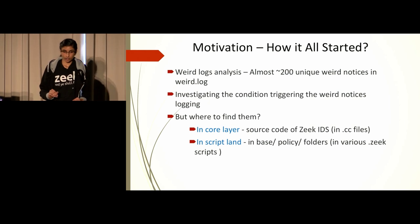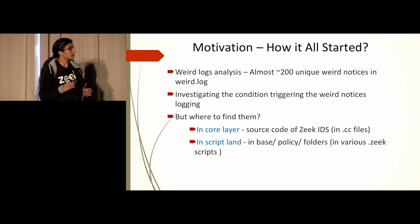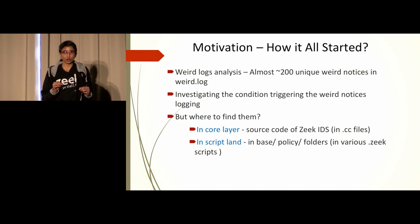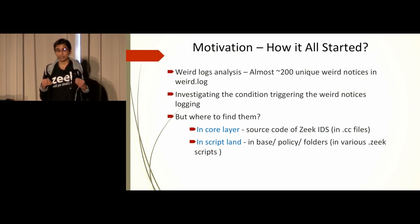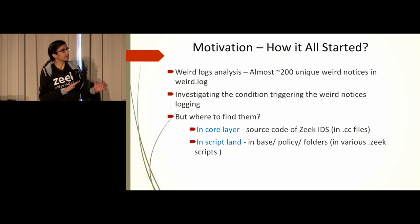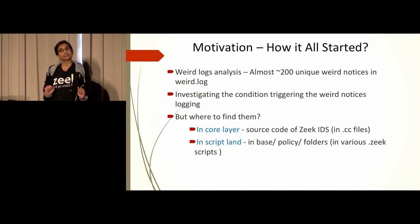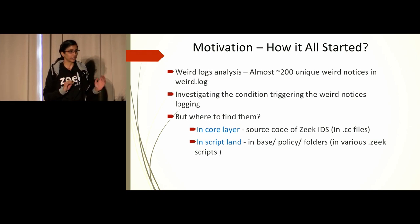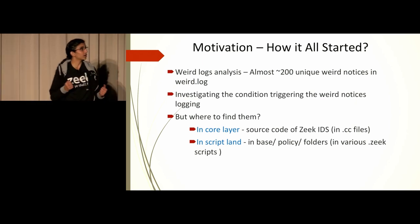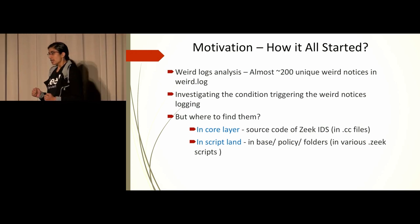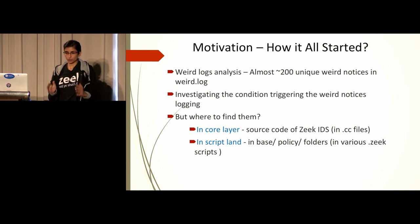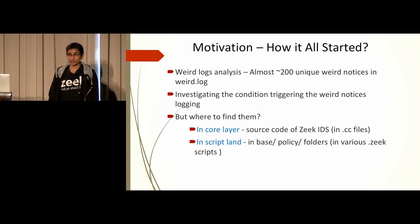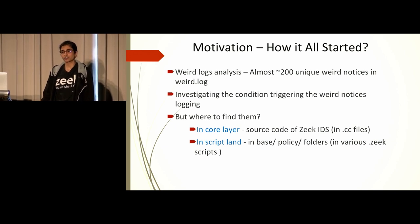The main motivation came from the weird.log file analysis we did last year. The weird.log is one of the log files Zeek generates — it notes all unexpected or unusual activity on your network. If you're running Zeek in production, you must have seen that file. When we were analyzing it, we realized we had almost 200 unique weird notices being triggered, and we wanted to investigate whether these were true positives or false positives, because if they were true positives we'd want to know why they were happening on our network.